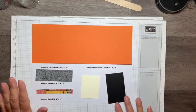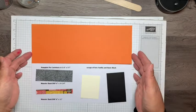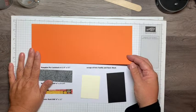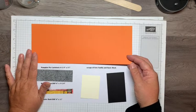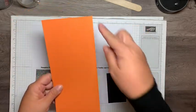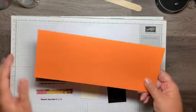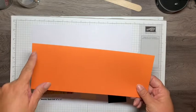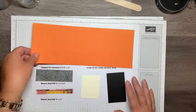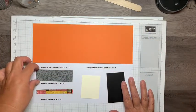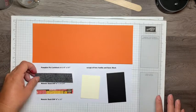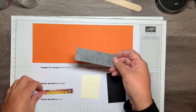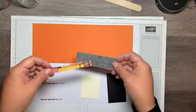This is the paper I'm using to make this treat bag. I started with a piece of 8.5 by 11 inch Pumpkin Pie cardstock and cut it down the middle lengthwise, so I'm left with a piece that is 11 inches by 4.25 inches. I also have some of Stampin' Up's designer series paper, the Monster Bash from the holiday catalog.